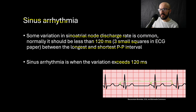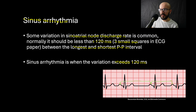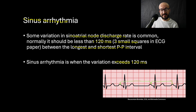Calculating the number of small squares, we have 28 small squares between the first and second P waves, and 19 small squares between the second and third P waves. That is definitely more than three squares difference, which confirms that we have sinus arrhythmia.